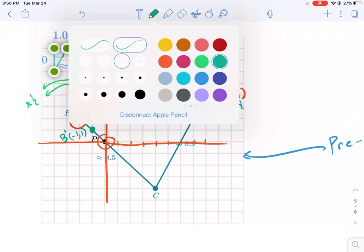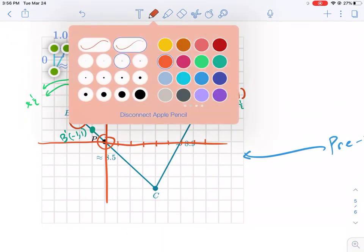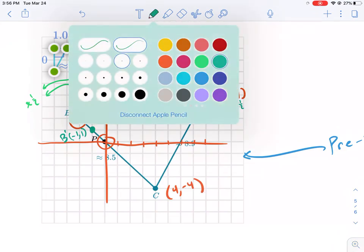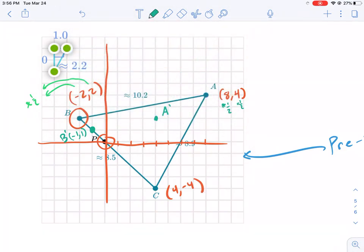Exact same thing with point C. Point C is four comma negative four. If you multiply both those coordinates by one half, we should get two negative two. And that is what our triangle should look like.